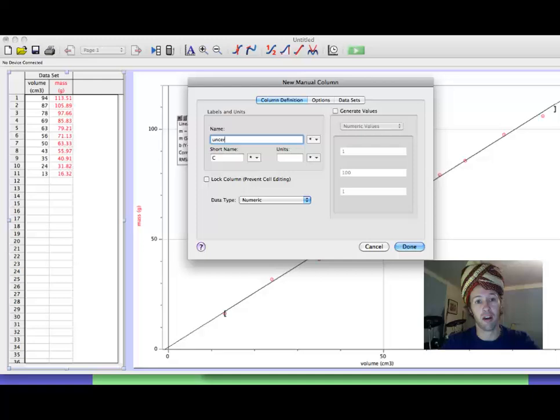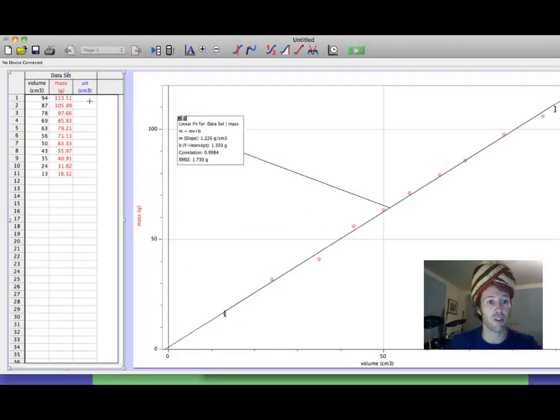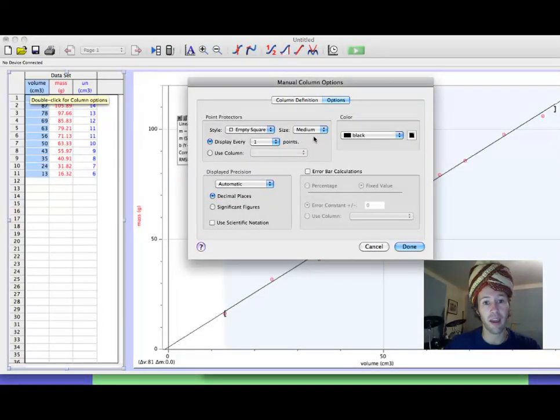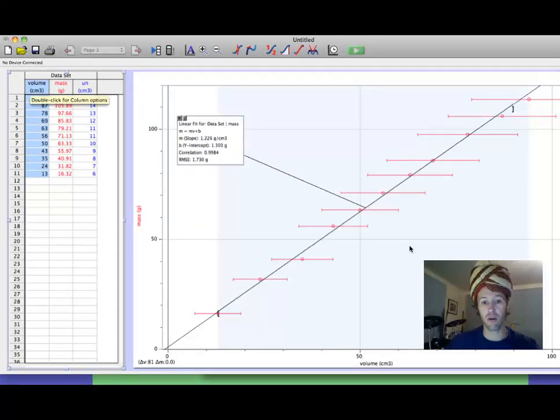And I'm going to label that Uncertainty of Volume, and give it the same units as Volume, which is cubic centimeters, and boom, that shows up there. And then I just paste in these values. Now to make them show up as the error bars, you go to the volume column, and you double click. And I'm going to go to Error Bar Calculations, and instead of making it a fixed value, which would be simple, I'm going to go to Use Column, and then that new column I made should appear. Then I hit Done. Woohoo! There they are.